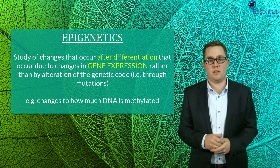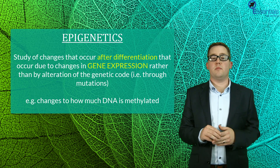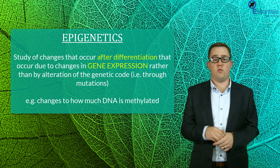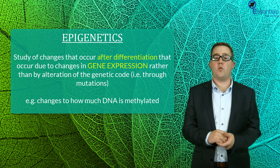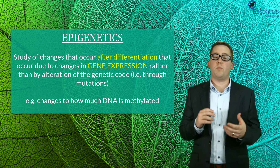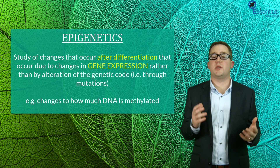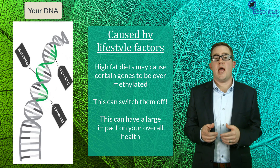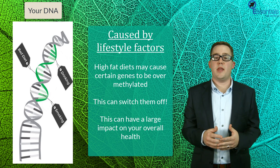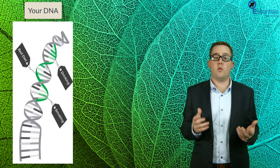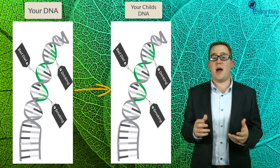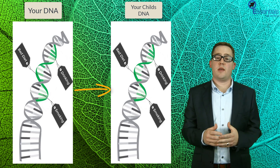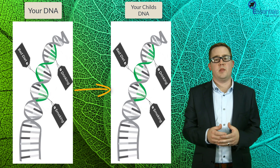Now that we understand how differentiation occurs and how genes can be switched off and on, we need to take a look at something called epigenetics. Epigenetics is the study of changes in organisms caused by modification of gene expression, rather than the alteration of the genetic code itself. Unlike changes caused by mutations, which are caused by changes to the DNA itself, epigenetic changes are only caused by modification of gene expression — for example, changes to how much DNA is methylated. There is strong evidence to suggest that these changes are brought about by lifestyle choices and environmental factors. For example, a high-fat diet can cause certain genes to be over-methylated and can therefore switch them off. This change to your gene expression can then have a large impact on your overall health. On top of this, there's also evidence that these epigenetic changes or tags may be inherited or passed down to future generations. If true, then things like the type and amount of food a person eats could affect their future child. So stay healthy — I guess that's the take-home message.